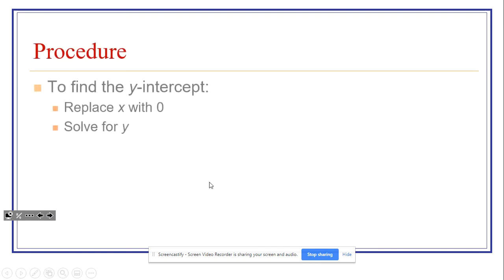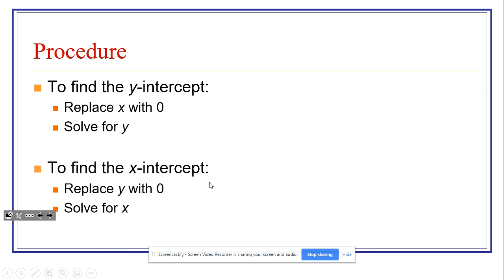So when we're looking to find intercepts, to find the Y-intercept, just given an equation of a graph or a function, we want to replace X-values with zero and solve for Y. On the converse, when we have an X-intercept, we want to replace the Ys with zero and solve for X.